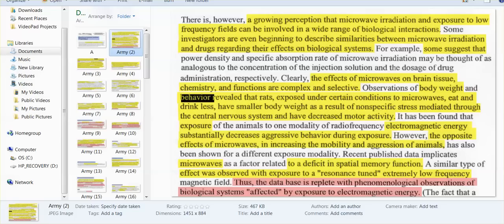So I don't want to see any more comments from people who are attacking other subscribers leaving comments about how they are feeling. Anyway, so yes, observations. They found that body weight and behavior revealed that rats exposed unto certain conditions to microwaves, they eat and drink less. Those that have smaller body weight, they have nonspecific stress mediated through the central nervous system, they've got decreased motor activity. The electromagnetic energy, they observed, substantially decreased aggressive behavior during exposure, but they also found the opposite was true. The effects of microwaves can increase the mobility and aggression of animals.